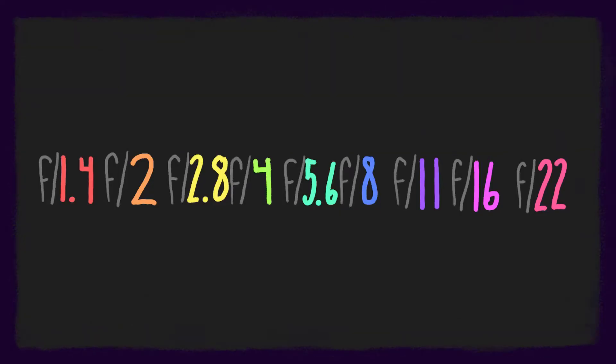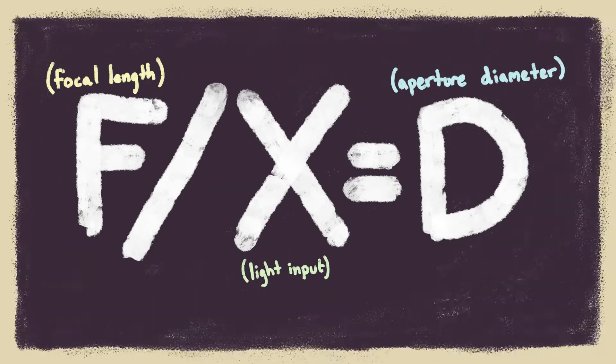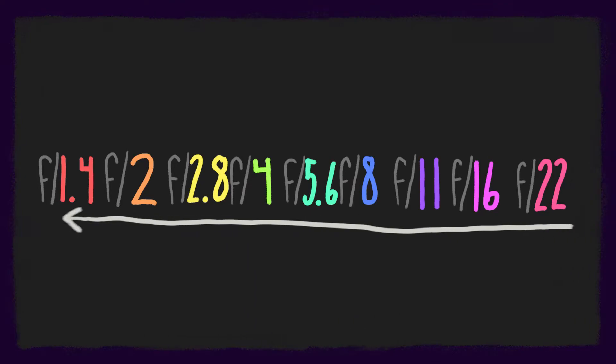I know it looks daunting at first, but let's walk through this together. The first thing I want you to notice is that f-stops are written with an f in the beginning, followed by a slash and then the number. While it seems like a dumb formality, it's actually super important to remember that f-stops are essentially a fraction with different proportions for different amounts of light. The numbers at the beginning of the scale represent f-stops that let more light in, so in turn a brighter image. Each number on the scale is known as a stop.